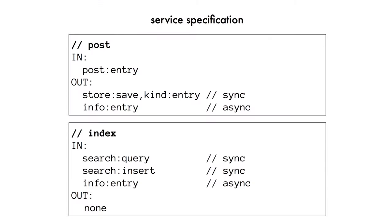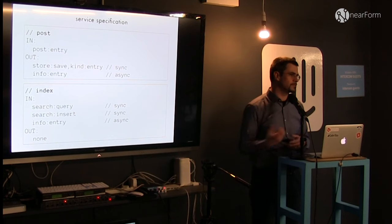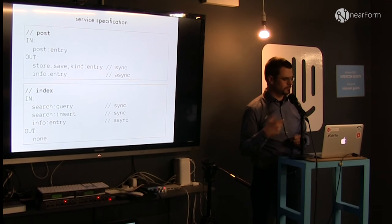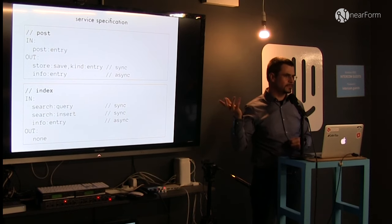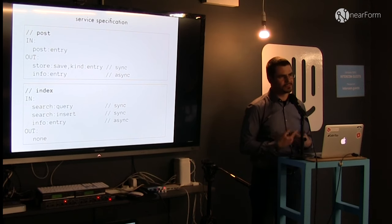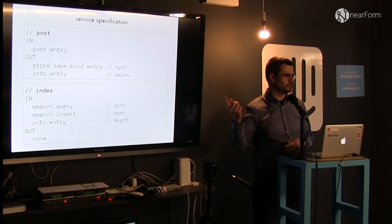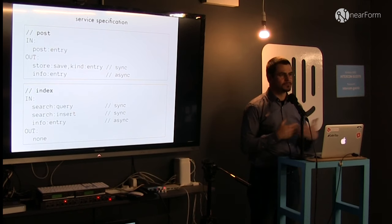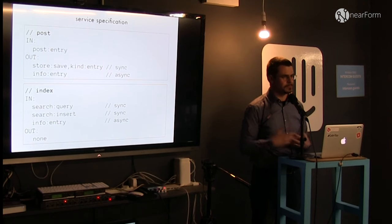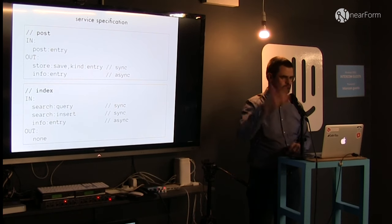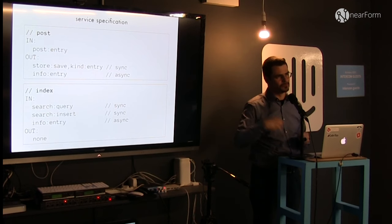For example, if I define the post service — the service that operates when I post a tweet — inbound messages it cares about are 'post entry.' Outbound, it's going to say: save the entry in some database somewhere, and announce 'there was an entry.' This is an example of a pub-sub architecture — when something happens in the system, you announce it to the world and the world decides what to do. There's a search indexing microservice that listens for those 'info entry' messages, captures them, and indexes them in a search index. But post and index have no knowledge of each other — they're just working on events and pattern matching the right events. These patterns are the metadata that gets propagated through the SWIM algorithm, and the client library maintains the mapping from patterns to locations of services.